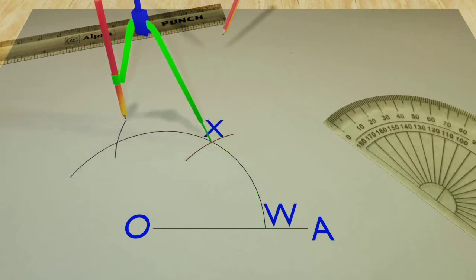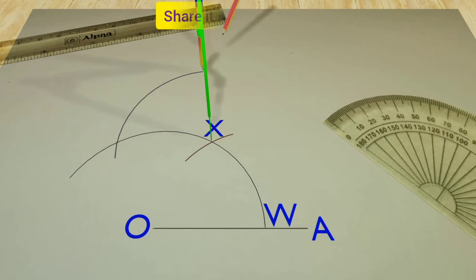Now with the tip placed at point X, another large circle segment with the same radius is drawn. This circle arc intersects the first arc at point Y.